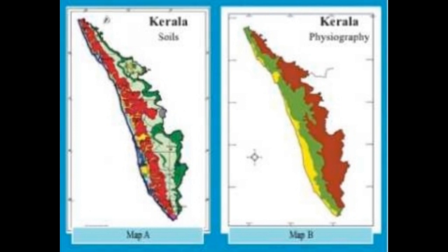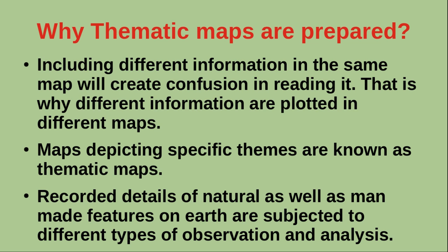These are the two maps of Kerala given in the textbook. The information included in these maps is not the same — map A depicts the soil of Kerala and map B depicts the physiography. Putting different information in the same map will create confusion in reading it. That is why different information is plotted in different maps. Maps depicting specific themes are known as thematic maps.